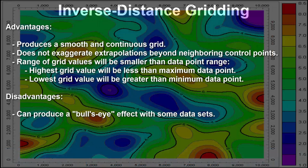The solution is to set the node spacing equal to no less than one-fourth of the average minimum distance between the control points. Advantages: when used properly, inverse distance gridding produces a smooth and continuous grid and does not exaggerate extrapolations beyond neighboring control points. The range of grid values will be smaller than the data point range. Disadvantages: inverse distance gridding can produce a bullseye effect with some data sets, especially when the cells are set too small.